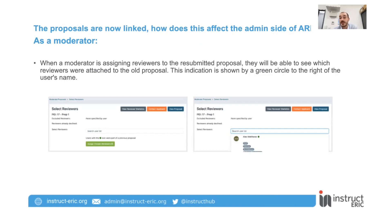In case they wanted to just assign the same reviewers or not, at least it gives them that information. So it's this little green circle that will appear when they're assigning reviewers.